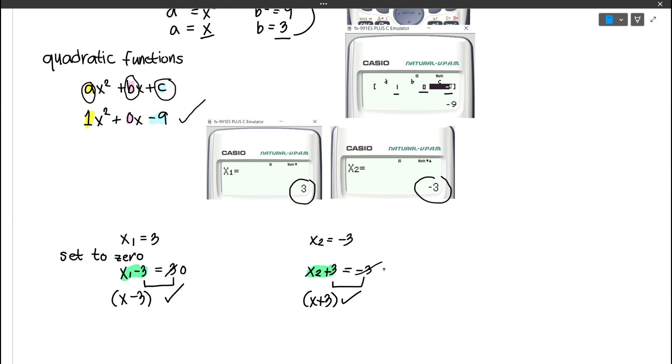And then for x2 equals negative 3, we can move negative 3 to the left side and it will become x plus 3 equals 0. And so, these would be the factors.